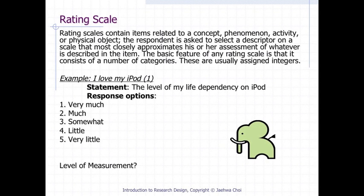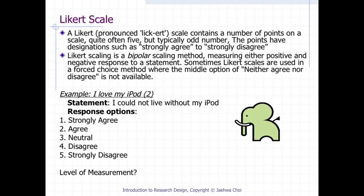Rating scale categories are usually assigned integers. A Likert scale contains a number of points on a scale, quite often five, but typically an odd number. The points have designations such as 'strongly agree' to 'strongly disagree.' Likert scaling is a bipolar scaling method, measuring either positive or negative response to a statement. Sometimes Likert scales are used in a forced-choice method where the middle option of 'neither agree nor disagree' is not available.